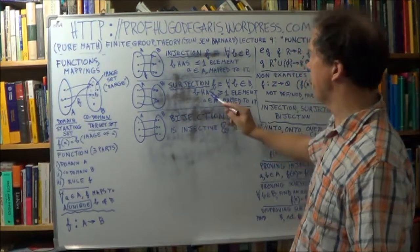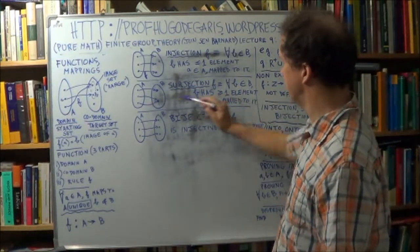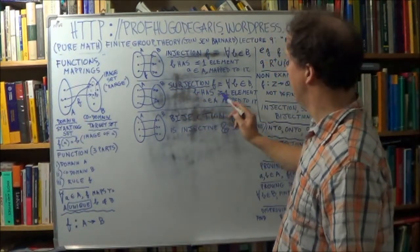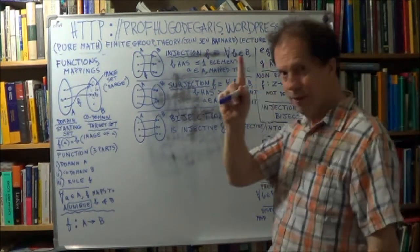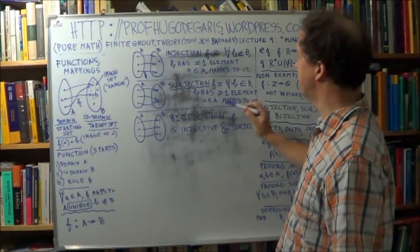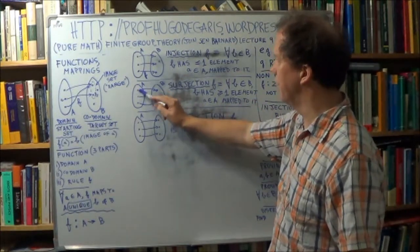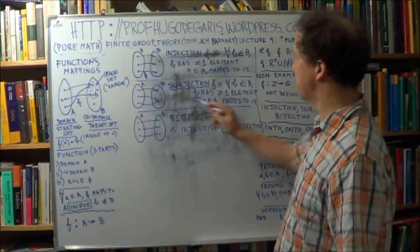So you've only got two of them. Little b, this element, has at least one element belonging to A that maps to it.